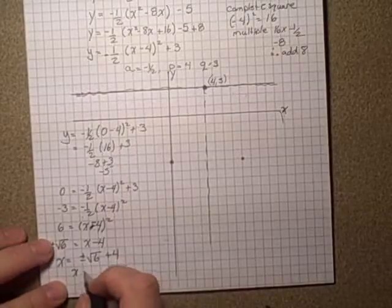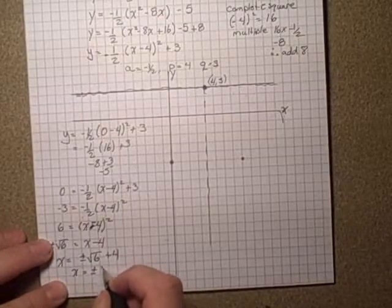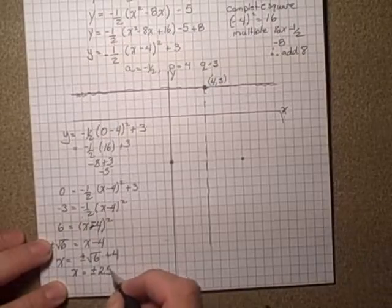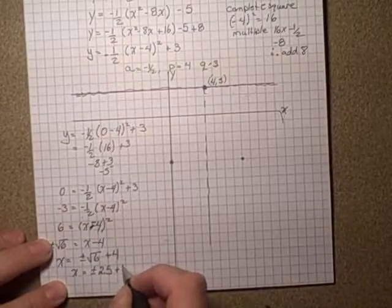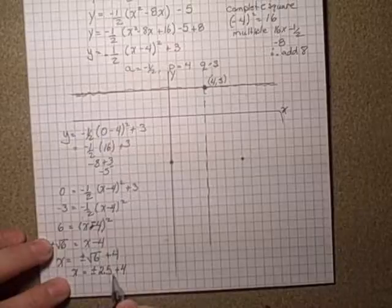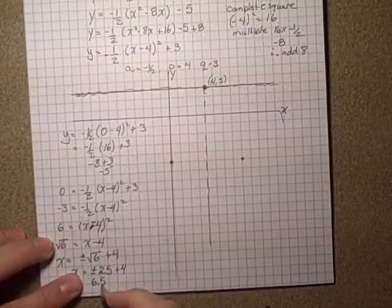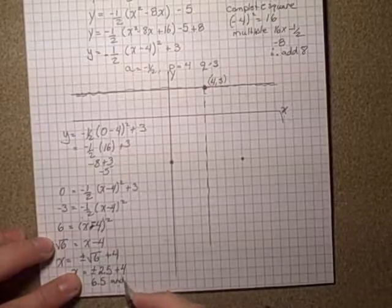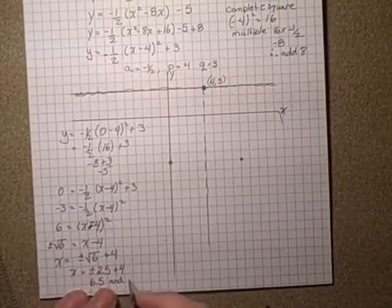So this would be, let me just check my field of view, make sure I'm not flying right off that. So x, the x-intercepts would be plus or minus 2.5 approximately plus 4. So plus 2.5 plus 4 is 6.5, and negative 2.5 plus 4 is 1.5.